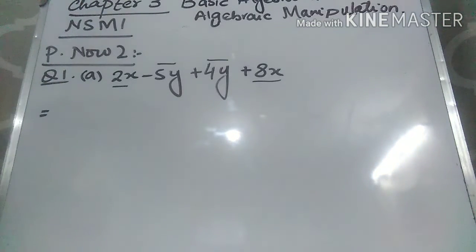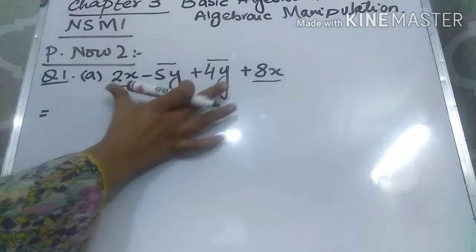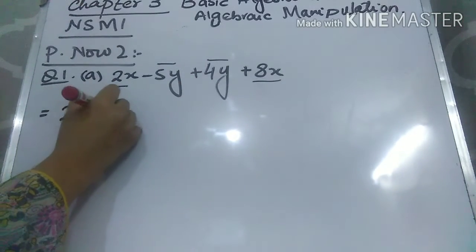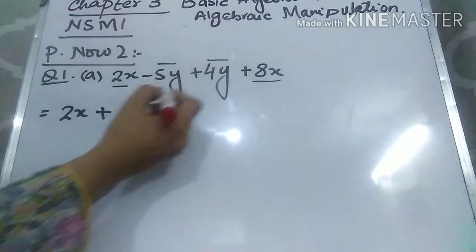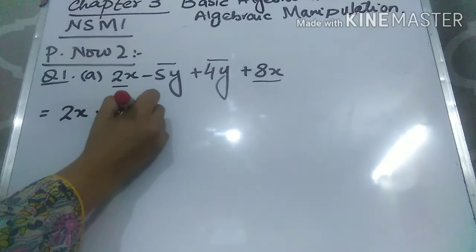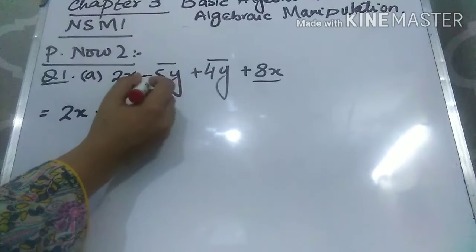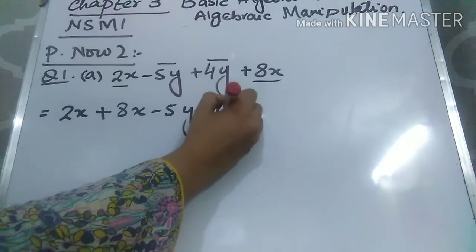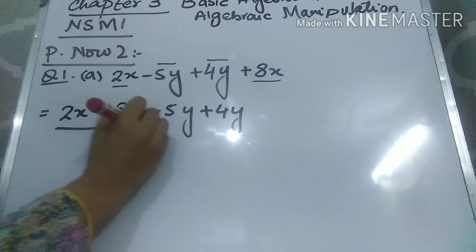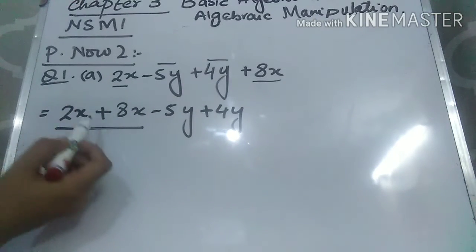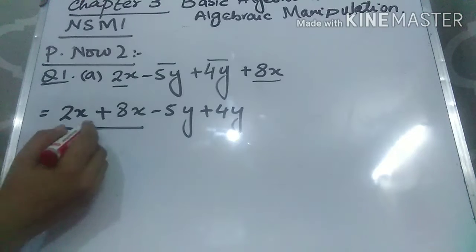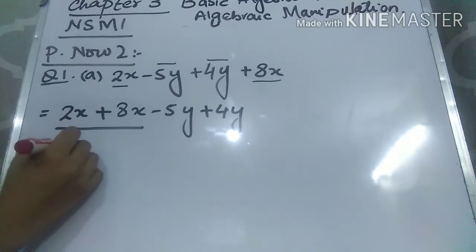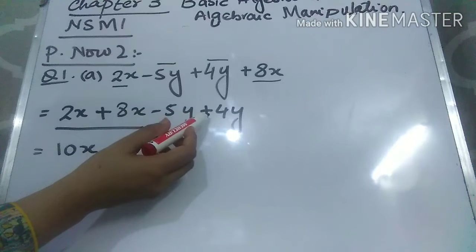The first step is to write the like terms together. So 2x and 8x are like terms — write them together with their signs. Don't forget to write the sign with the term. Now write the Y terms: minus 5y and plus 4y. Write them together. Both plus signs on the X terms give plus, and 2 plus 8 equals 10x.